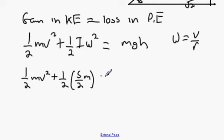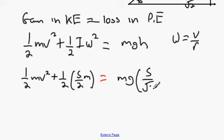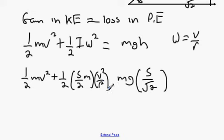The right-hand side equals mgh, and we're going to change h into S over root 2. Now we multiply this out. I forgot to include omega squared, which is v²/r². Multiplying out gives us: half mv² plus 5/4...